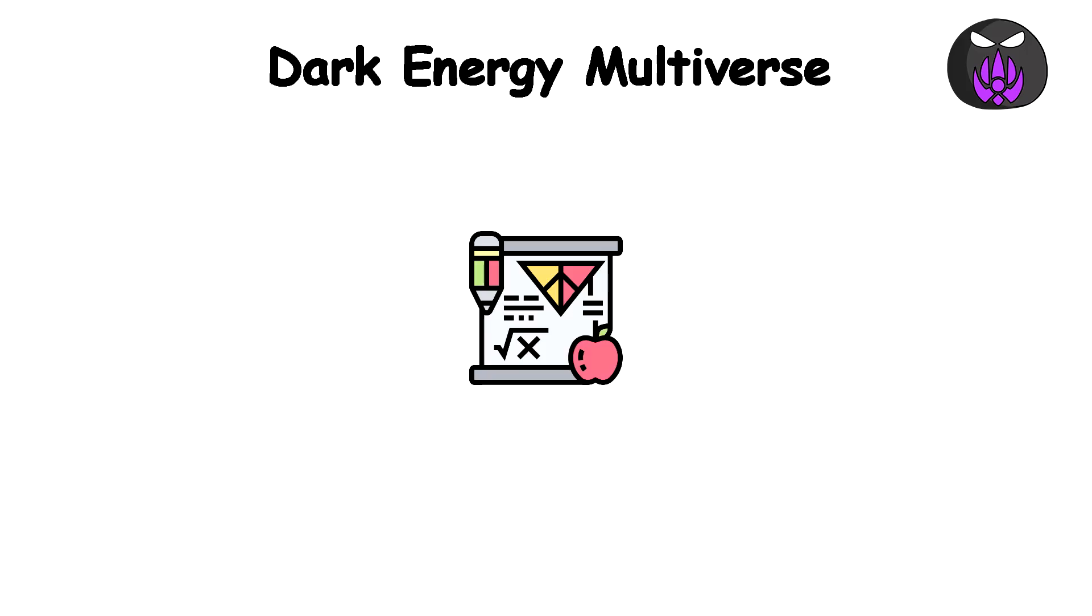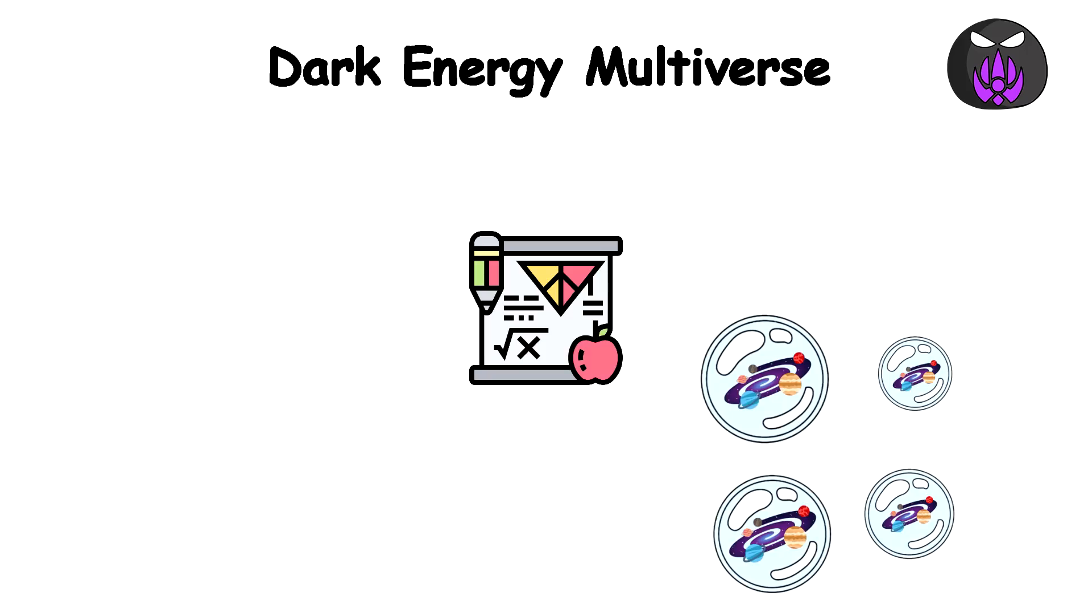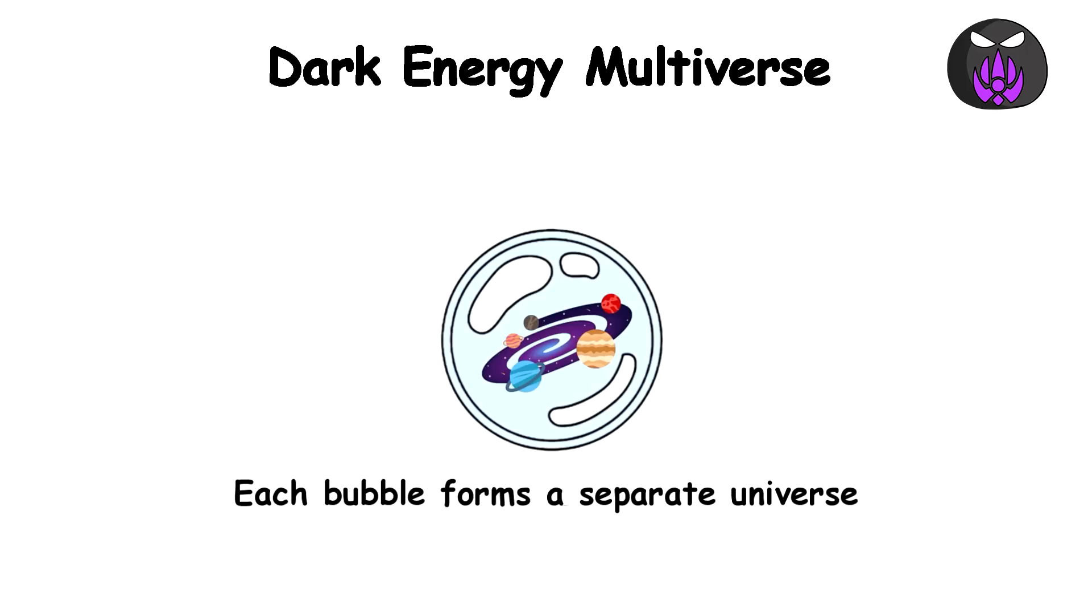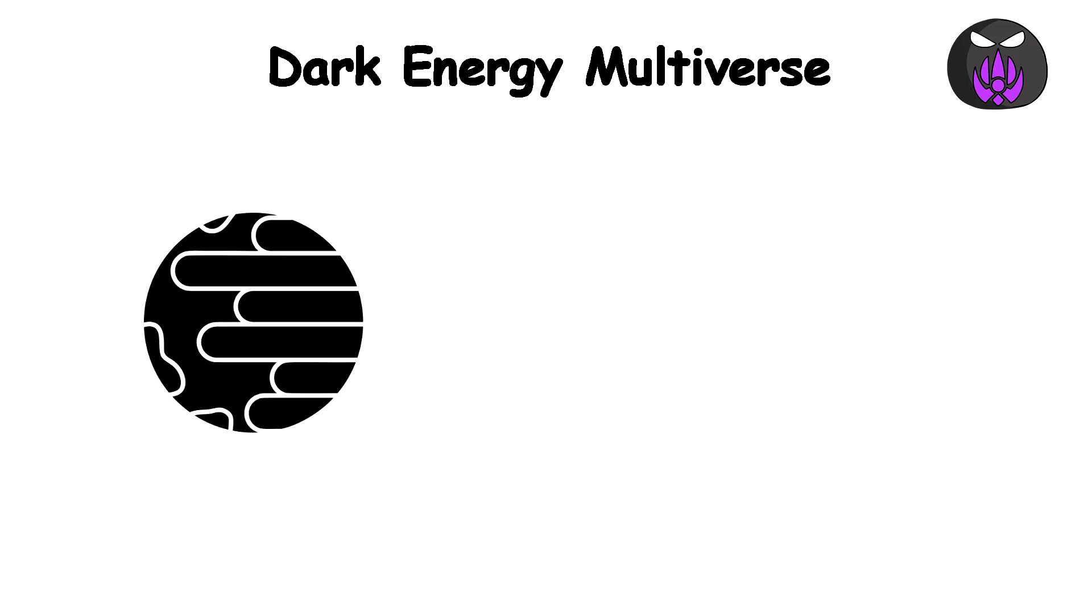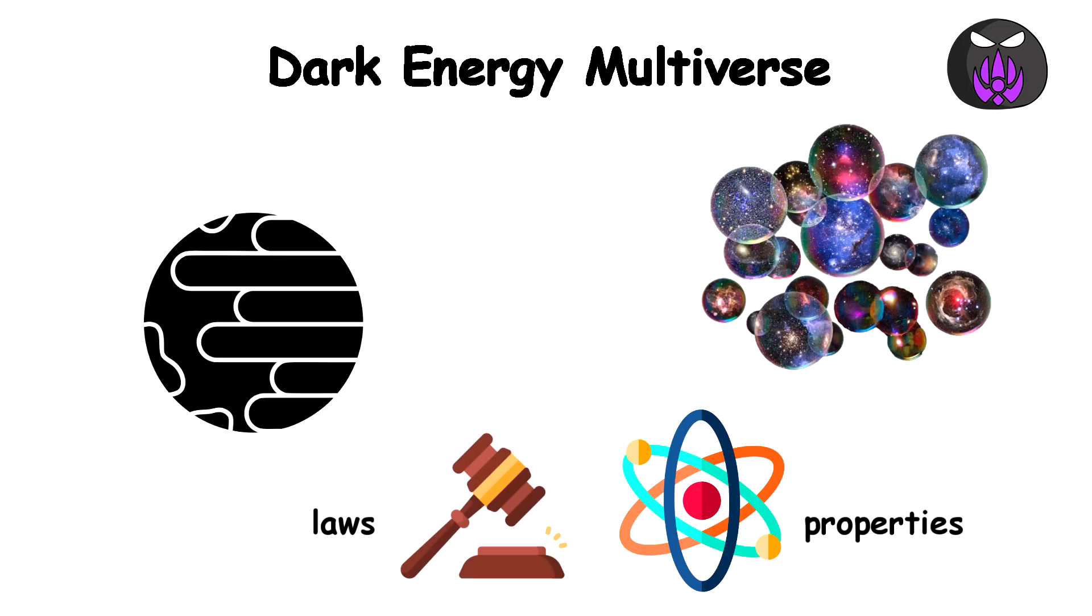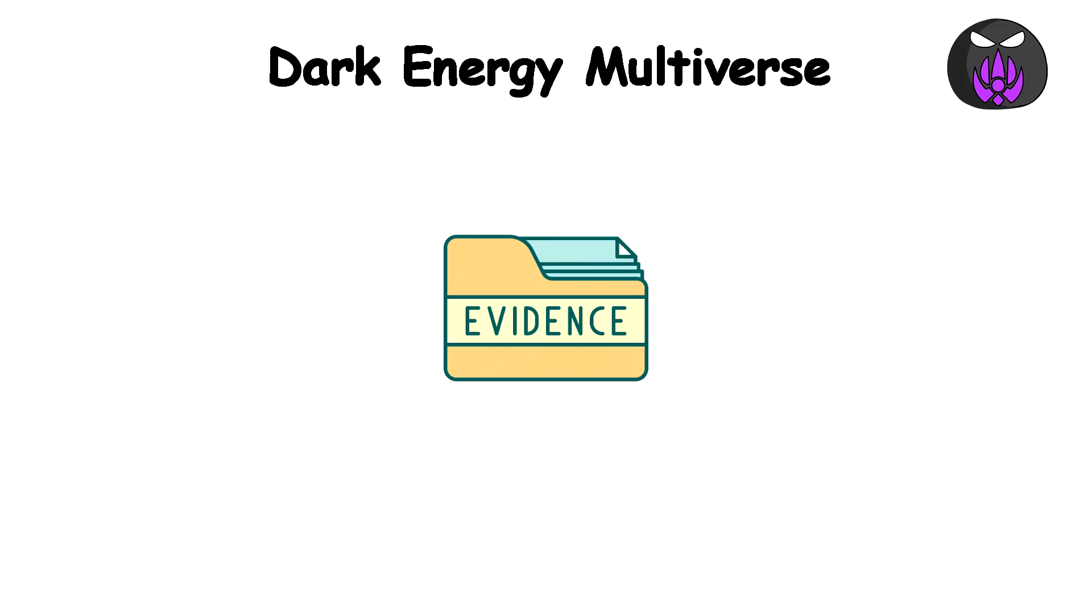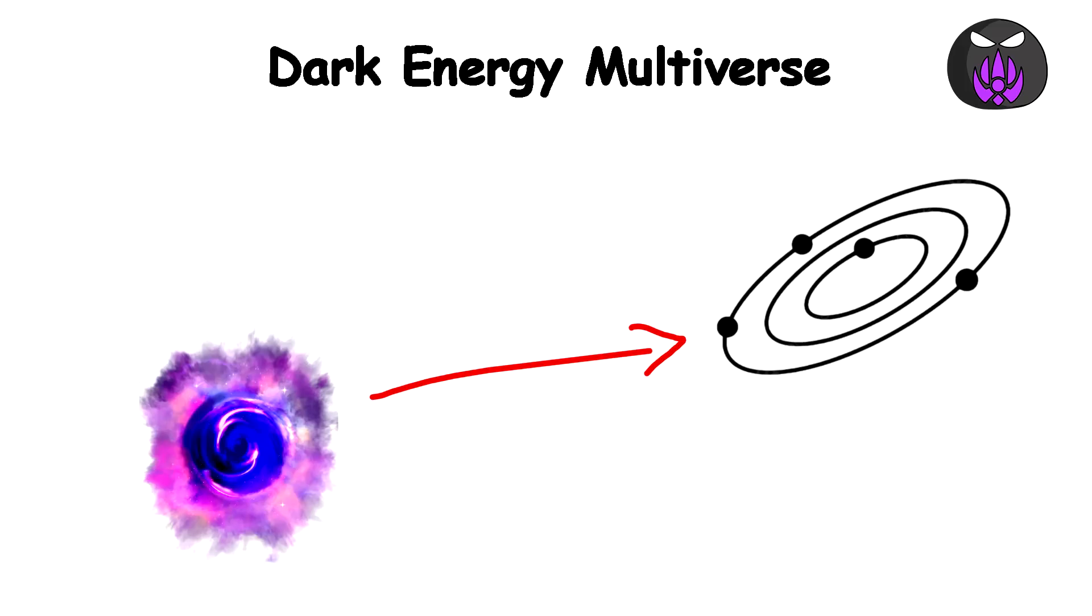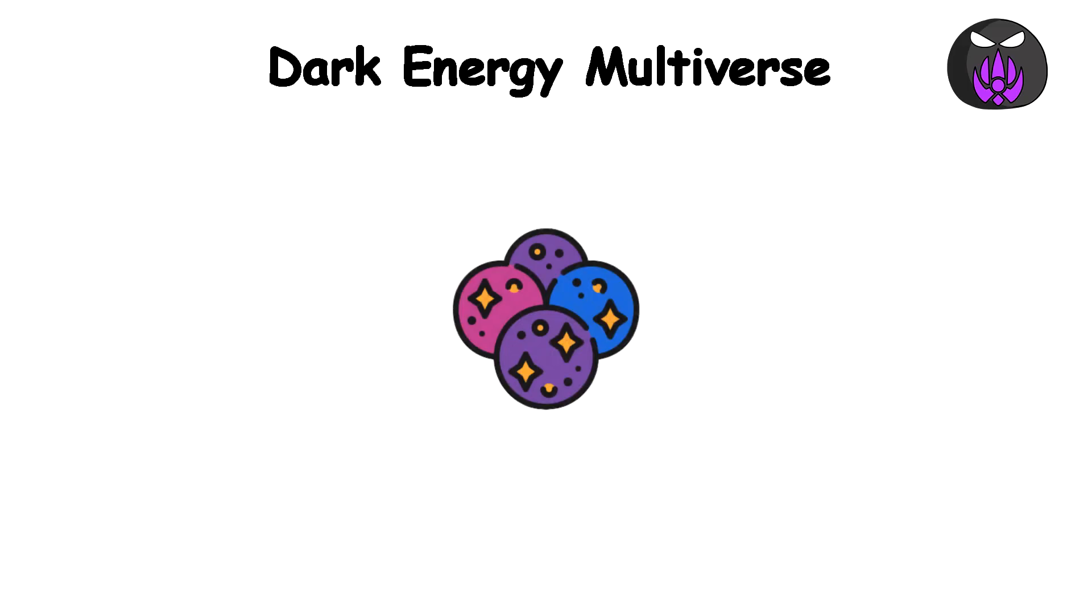So, in this theory, dark energy creates new bubbles endlessly across the huge field it exists in. Each bubble forms a separate universe. Depending on the dark energy differences, these universes can have different laws and properties. The key evidence would be finding that dark energy varies across space instead of being uniform. That could support the patchy multiverse concept.